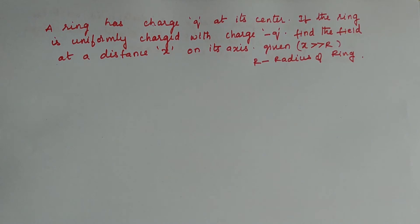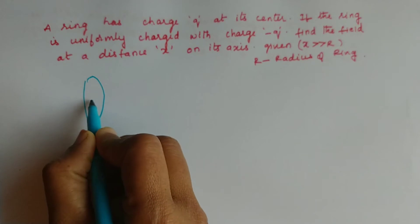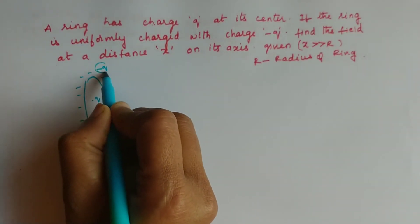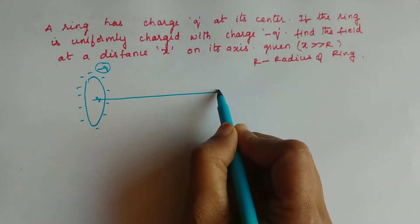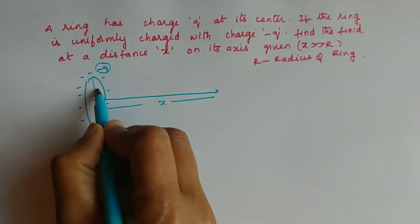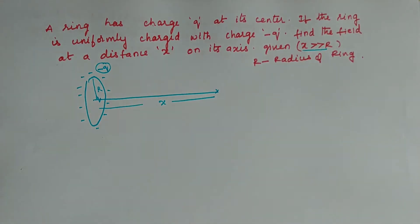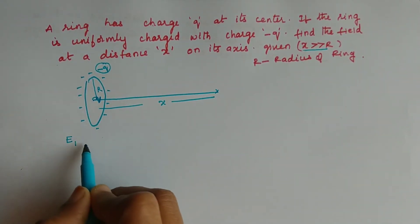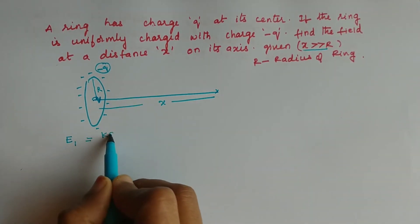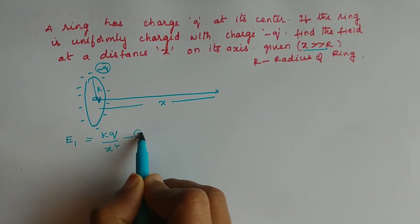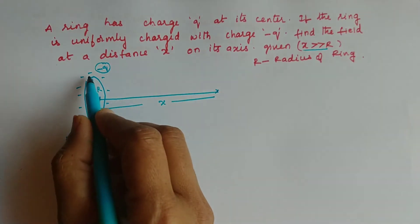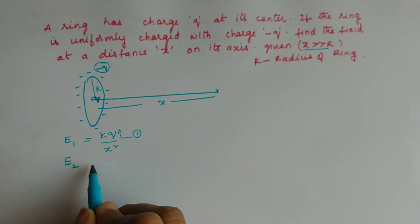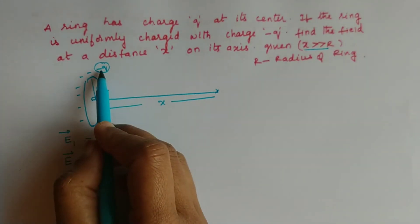In the next question, a ring of radius r has a charge +q at its center and a charge −q uniformly distributed on the ring. We need to find the electric field strength at distance x on the axis, given x >> r. The field due to the point charge +q at the center is E₁ = kq/x² in the i-cap direction. The field due to the ring of charge −q is E₂ = kqx/(x² + r²)^(3/2) toward the ring (minus i-cap direction).